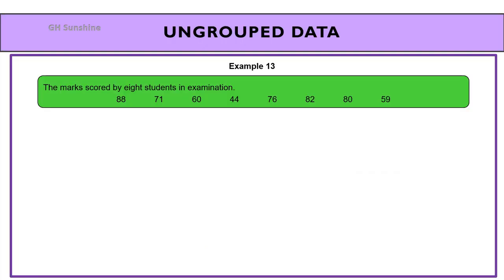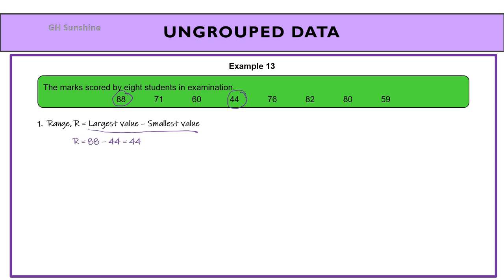First example: based on ungrouped data, the marks scored by eight students in an examination. To calculate the range for ungrouped data: largest value minus smallest value. From the data set, the largest value is 88 and the smallest value is 44, so the range equals 44.